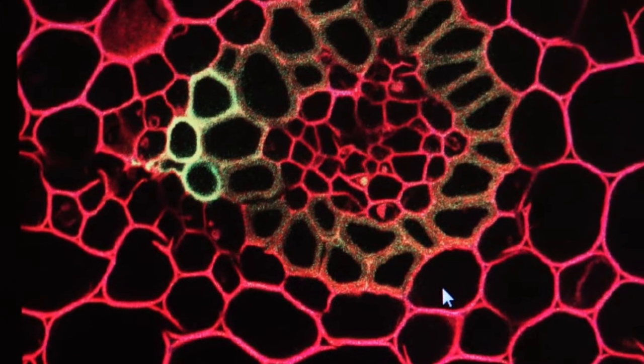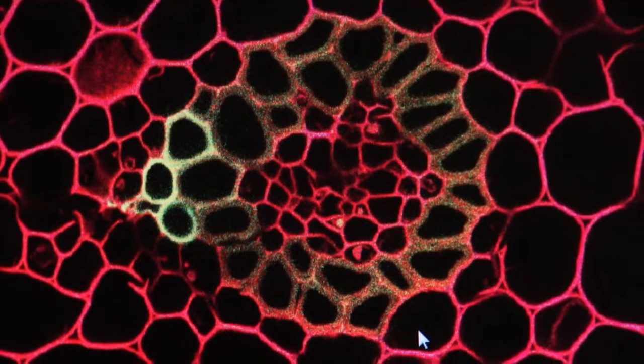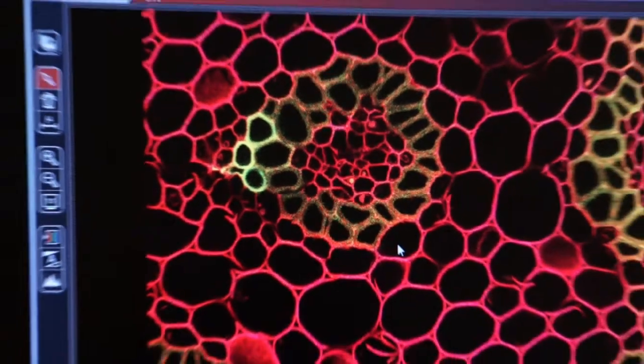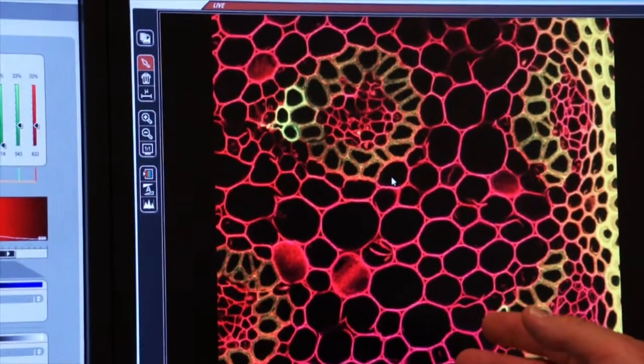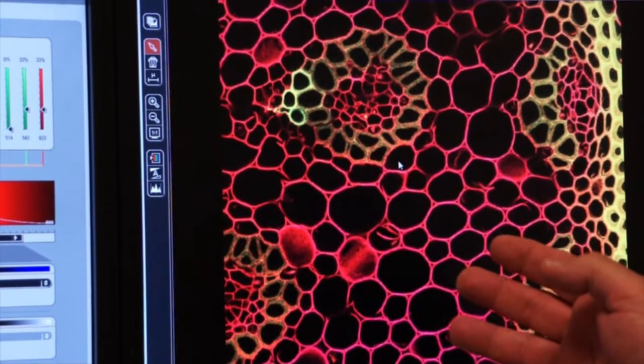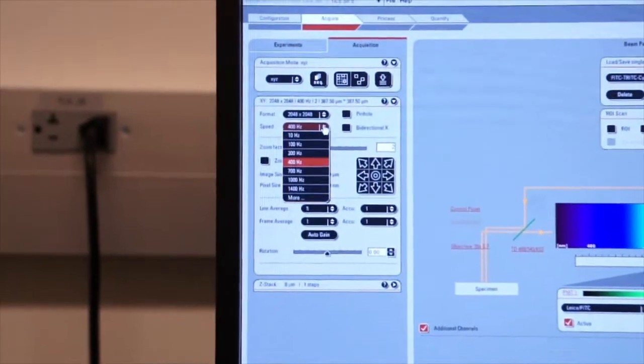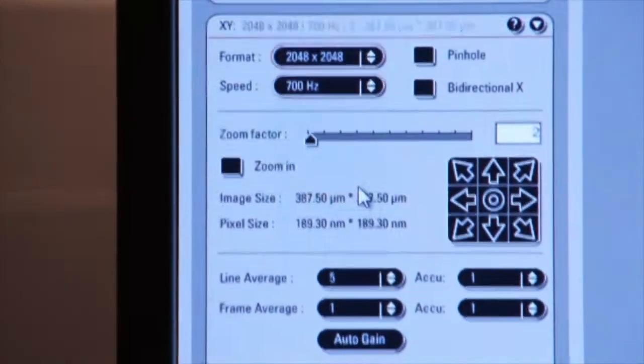So line averaging, frame averaging are very useful. Now remember you see how slow the scan is because we're doing many averages. How do I increase that speed? Well I can go back over to my speed pull down menu and let's say I want to increase it to 700 hertz.